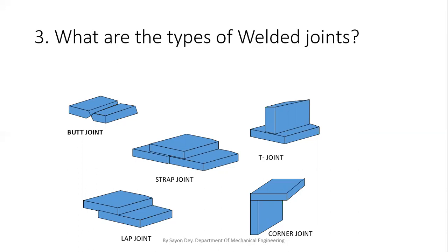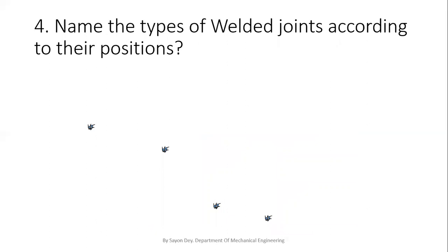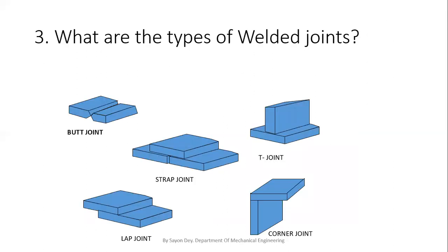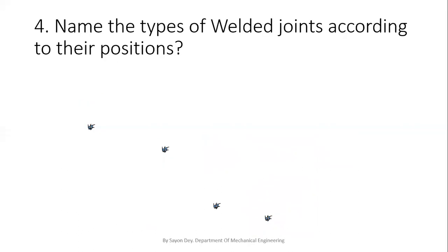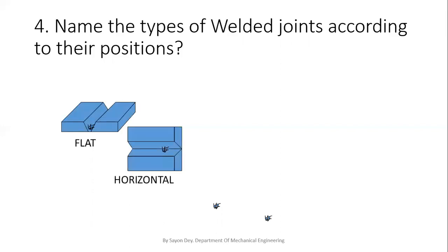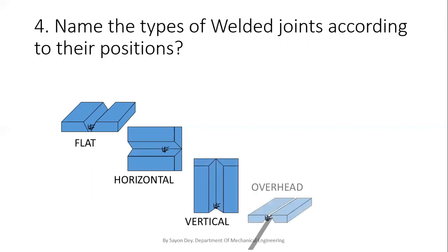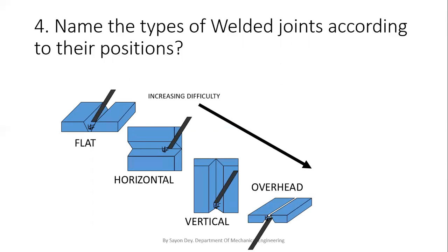One confusion may arise here — there is another type of classification for joints. Question four is: name the types of welded joints according to their positions. When asking about welding joints according to their positions, your answer will be different from the normal one. According to position, the welding joint types are: first is flat, second is horizontal, third is vertical, and fourth is overhead. These are the types of welding joints categorized according to their positions — this is a very important and basic part of welding.